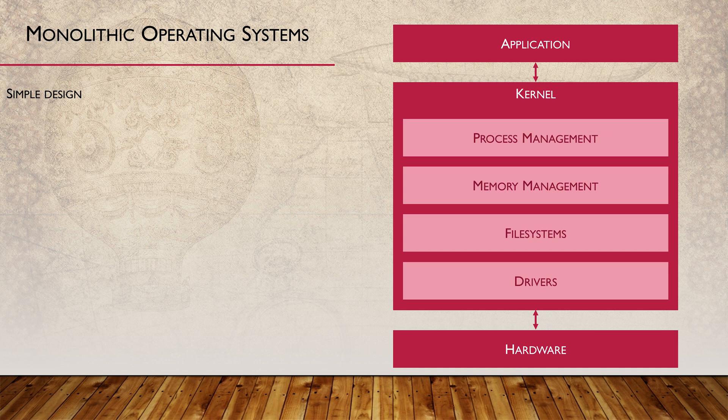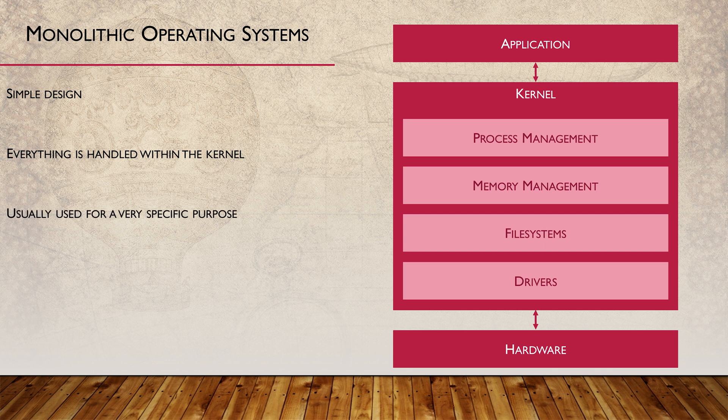When it comes to operating systems, there are two main designs: monolithic and modular. The monolithic architecture is very simple. All processes, including memory management, file management, device management, and process management are contained directly in the kernel. This can be used for very specific purposes and it can be very fast too.